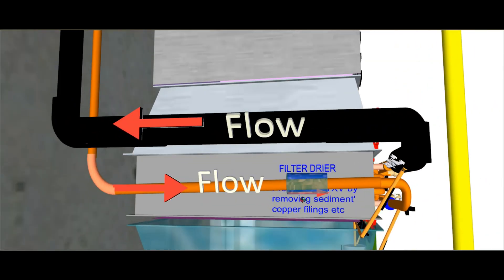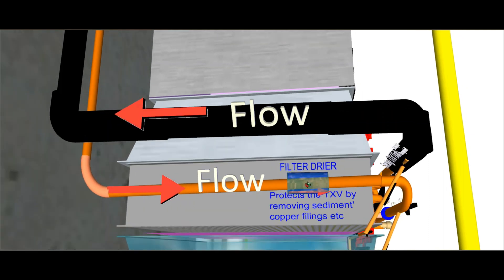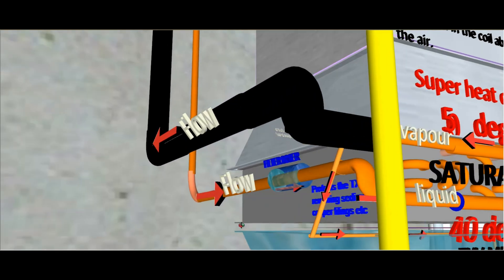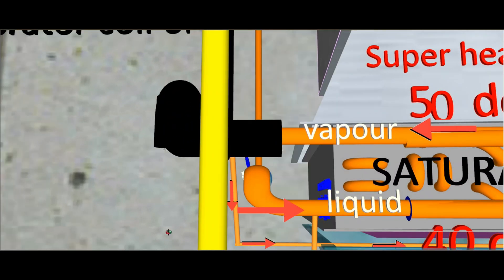The job of the filter dryer is to remove some condensation and also protect the TXV, which is the metering device, by removing sediment and copper filings from when you first install it, which always tends to happen with copper. So here it's going to turn and come around. Now I made a bit of a mistake—I should have just ended it there, so I put a little stop here. It's not going to go through here. It's got to go through the metering device first.